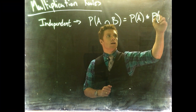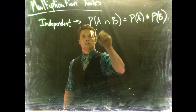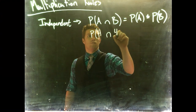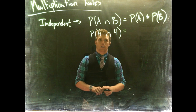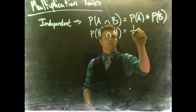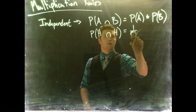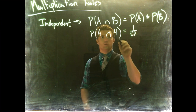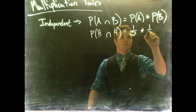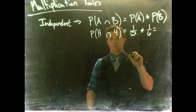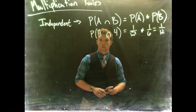Let's go back to our coin example. If we have the probability of heads and a four — that's the probability of flipping a head and rolling a four on a die — the probability of heads is one divided by two, multiplied by the probability of rolling a four, which is one out of six, giving a total probability of one-twelfth.